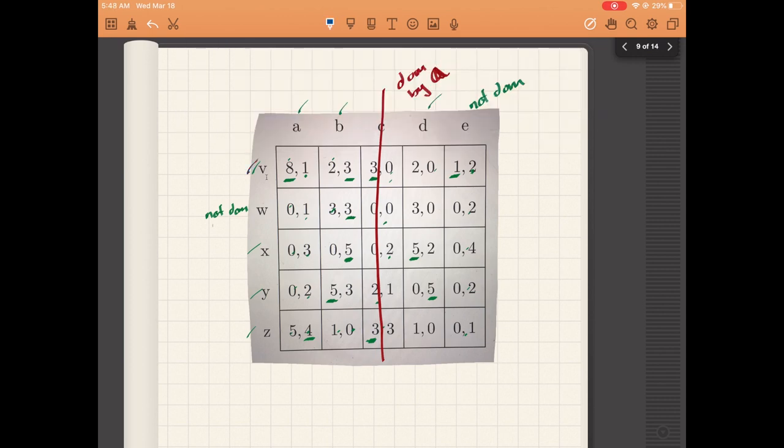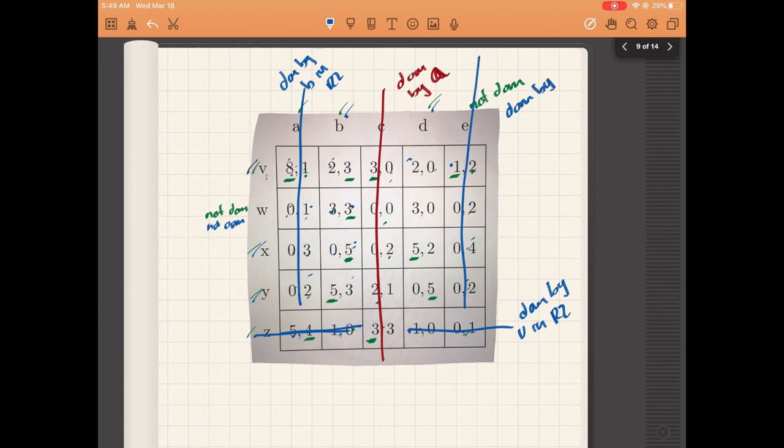Once we eliminate c, v is still a best response. x and y are also best responses. z is not a best response to anything and is dominated by v. w is still not dominated by any other action. For player two, a is no longer a best response. b and d are, but e is dominated by b.